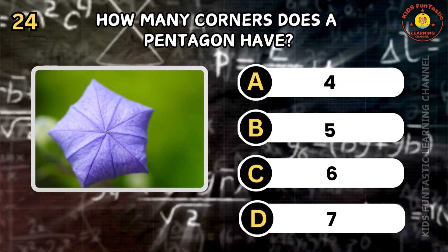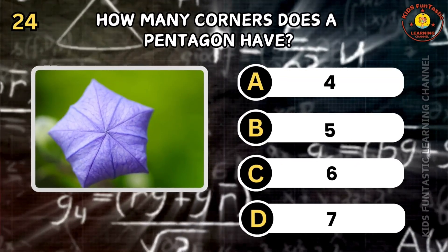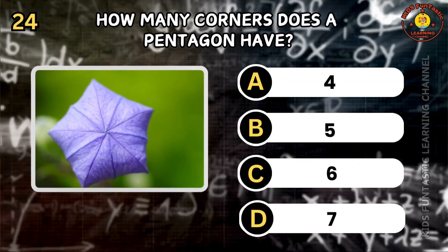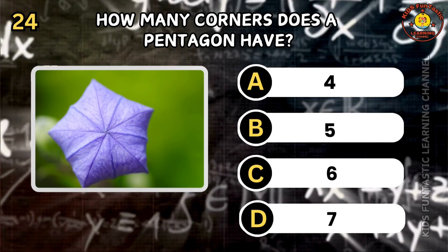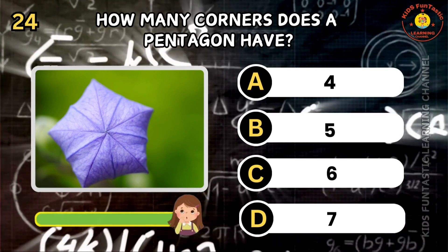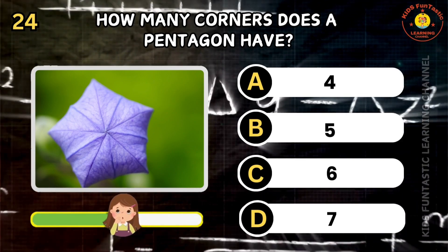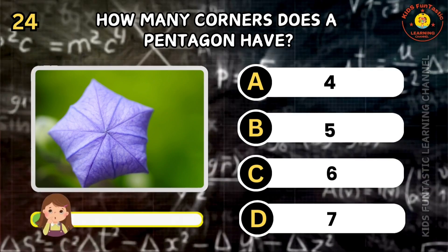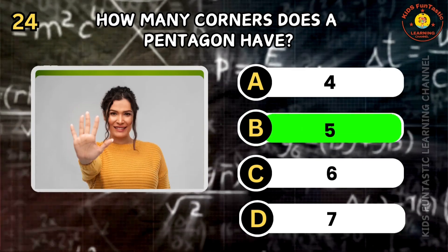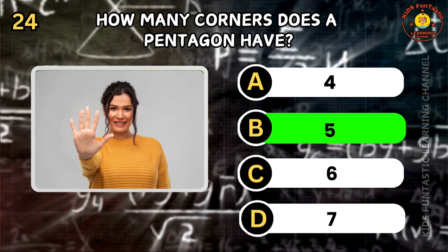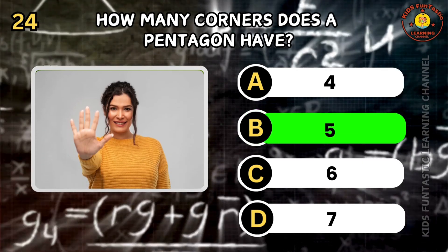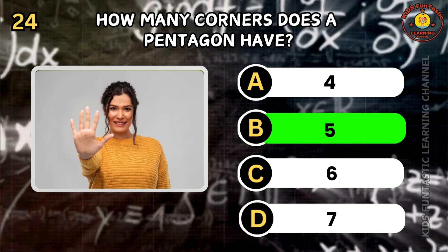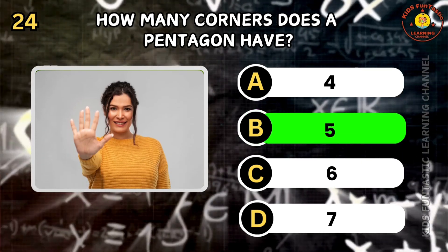Question 24. How many corners does a pentagon have? A: 4, B: 5, C: 6, D: 7. You're absolutely correct! The correct answer is B. A pentagon has five corners.